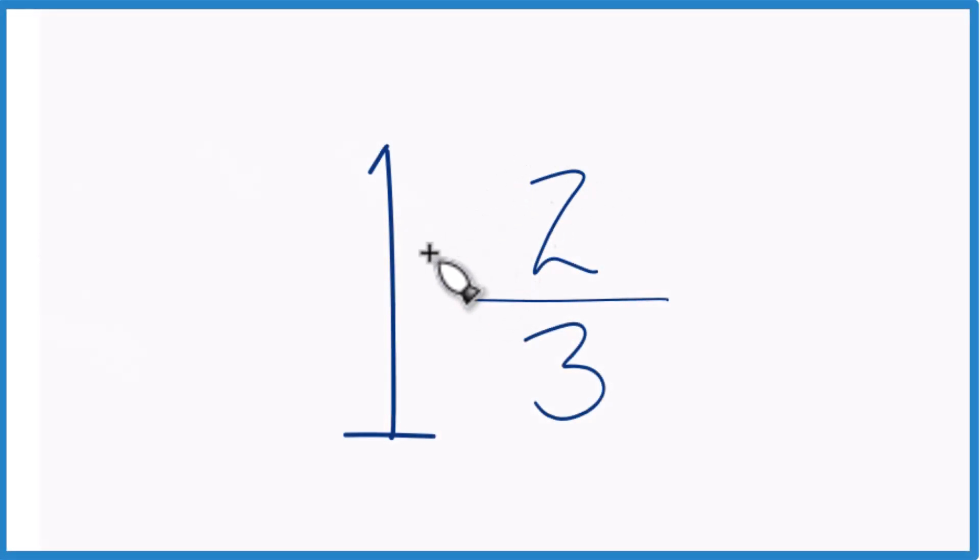So if you're given the mixed number 1 and 2 thirds, how do you get that to be an improper fraction where the numerator is greater than the denominator? So here's how you do it.